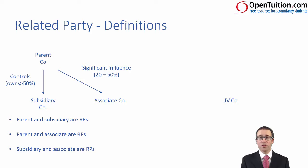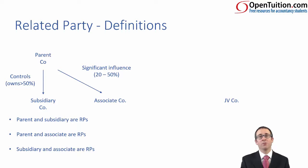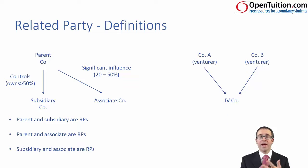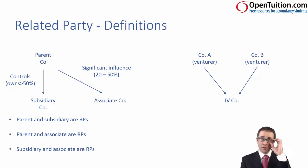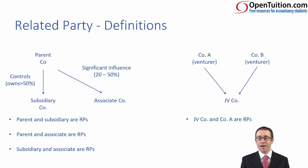If we look at a joint venture company — we looked at joint arrangements under IFRS 11, which included a joint operation and a joint venture. Here we're focusing on the joint venture where a separate legal entity is set up. We have two companies, Company A and B, who are each venturers within the joint venture company. They have joint control over JVCo, so Company A and JVCo are related parties.